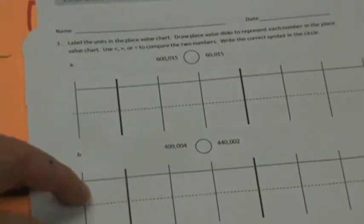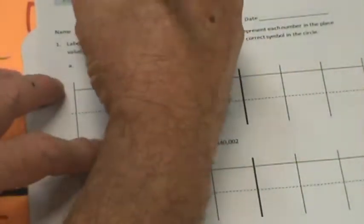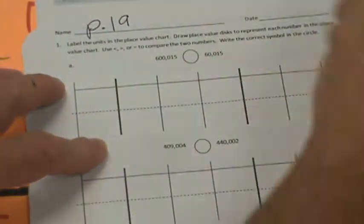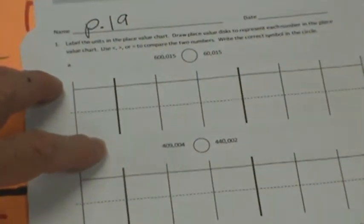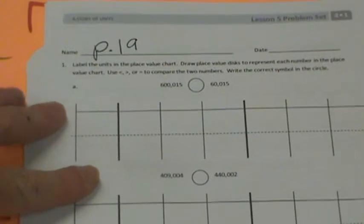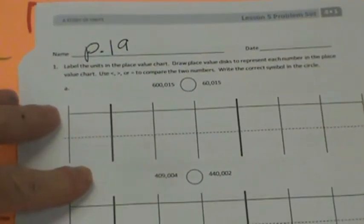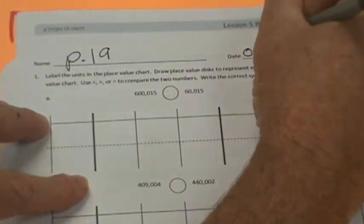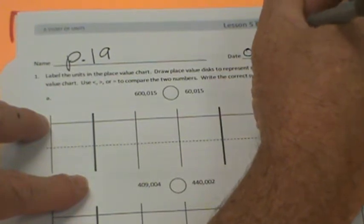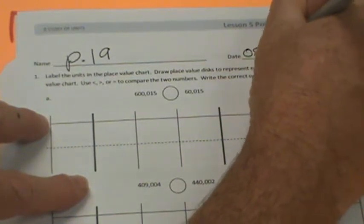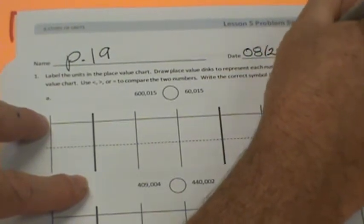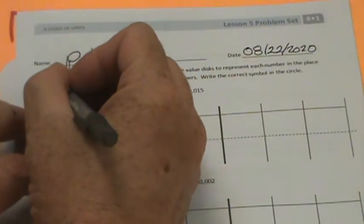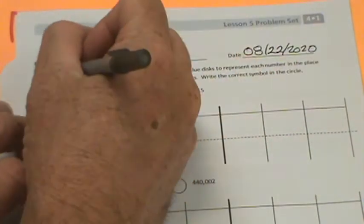Page 19, there we go. Today's date is 08, what is today's date? Because I'm one day ahead, so it's the 22nd. I'm doing this yesterday. Alright, this is label the units in the place value chart. Draw place value disk to represent each number in the place value chart. Use less than, greater than, or equal to compare the two numbers. Write the correct symbol in the circle.